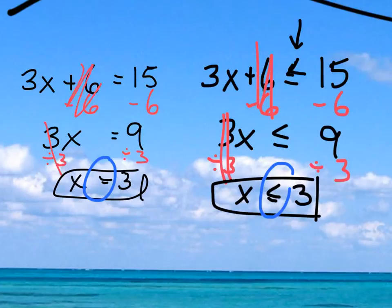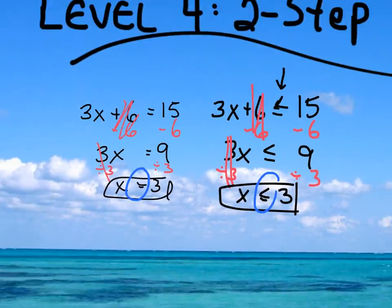Pretty basic, right? The only other important thing to remember is from the last level, where we learned what happens to an inequality if you multiply or divide with a negative number. If you remember, what happens is the symbol switches direction. So as long as you remember that rule, solving two-step inequalities is really simple. But let's go ahead and try some examples here.